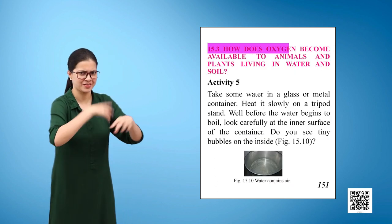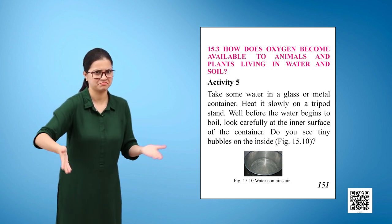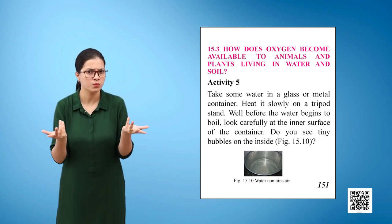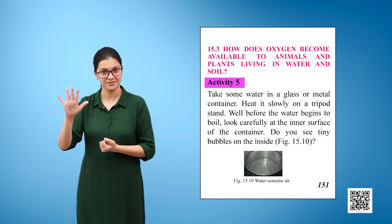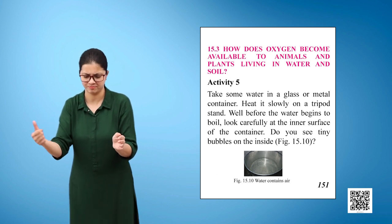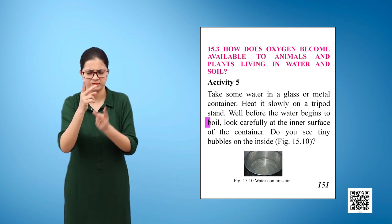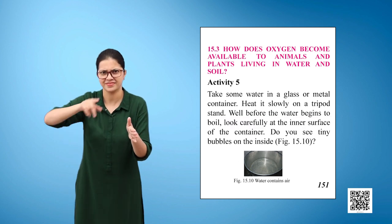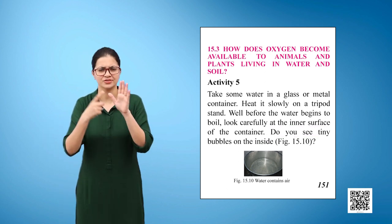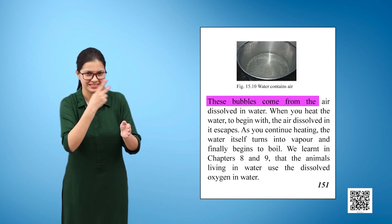How does oxygen become available to animals and plants living in water and soil? Activity 5: Take some water in a glass or metal container. Heat it slowly on a tripod stand. Before the water begins to boil, look carefully at the inner surface of the container. Do you see tiny bubbles on the inside? Figure 15.10.